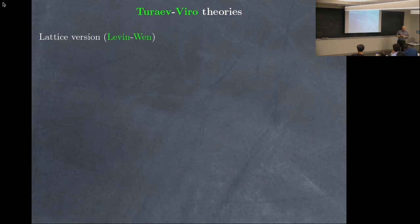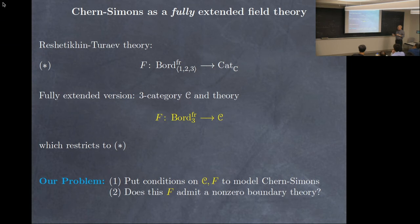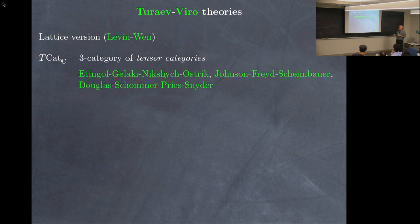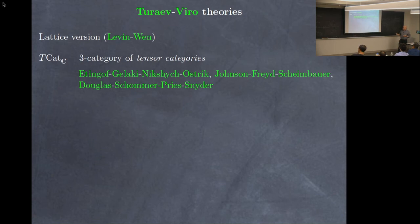Let me remind you about Turaev-Viro theories, which I think in condensed matter are also called Levin-Wen theories. For these theories there is a good choice of target category: it's called the three-category of tensor categories. A tensor category is a categorical version of a ring. The theory of those was developed in many papers and a beautiful book, and to make that chapter in algebra into the form appropriate to be the codomain of a field theory, there is work of these people. Our theorem is certainly relying on those foundations.